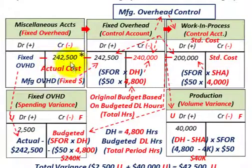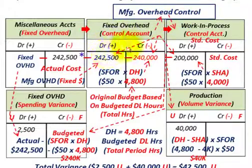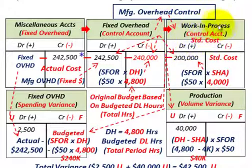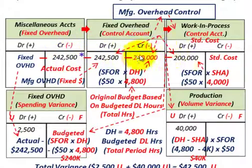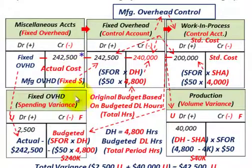Conceptually, we start with the actual fixed costs for the period — say on a monthly basis — and those flow into a manufacturing overhead control account (shown here as a fixed overhead control account). From there it flows into our work-in-process control account at the standard cost. The difference between the standard and actual fixed overhead costs is divided between the spending variance and the production volume variance for fixed overhead.